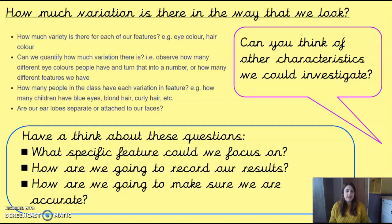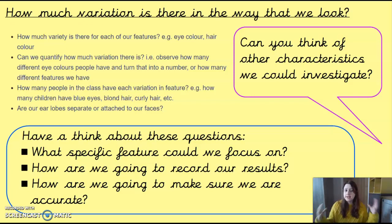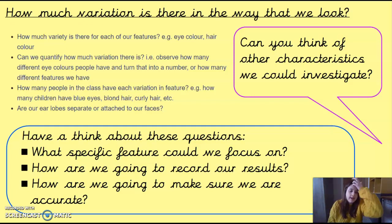What you need to decide is which feature you are going to do your investigation on — it has to be one of the things asked in the questionnaire, because then you've already got your data. You might decide to look at hair colour, eye colour, shoe size, height, hand length, hair type, freckles, or lots of different things. Think about the one thing you're going to look at, because if you looked at everything, you just wouldn't get a clear result.